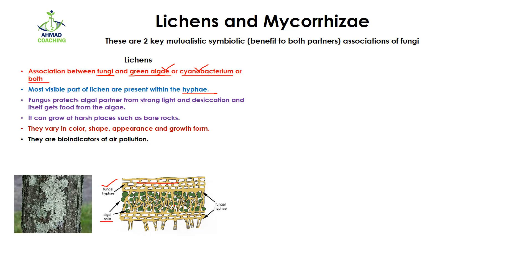Now why is this association beneficial, or why are we calling it mutualistic symbiotic? In this association, fungus is going to protect the algal partner — it protects green algae from strong light as well as desiccation, which means evaporation of water. In return, fungi gets food from the algae, because algae has photosynthetic ability and prepares food that is shared with the fungi.